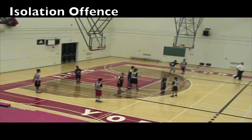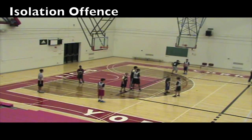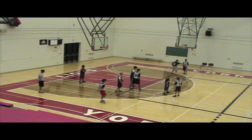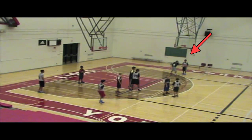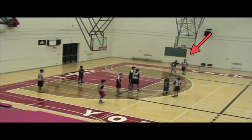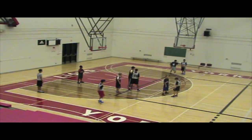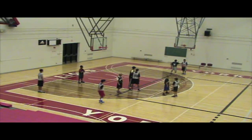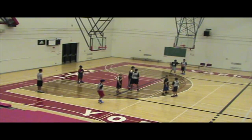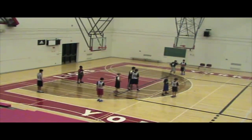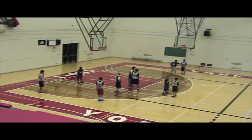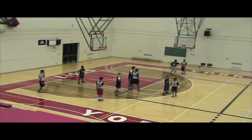This would be considered an isolation because there's only one offensive player on this side of the rim line, on ball side. So on ball side, there is no one pass away — they've eliminated the one pass away. So in this scenario, all rules are null and void.